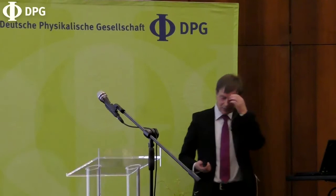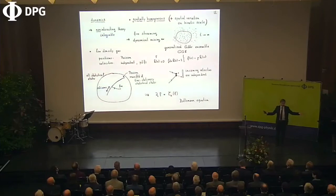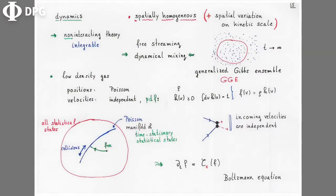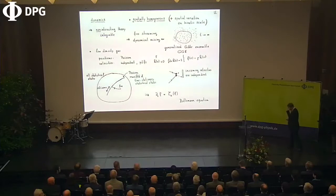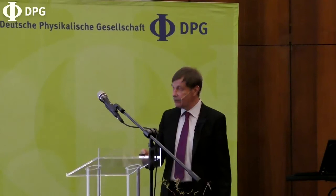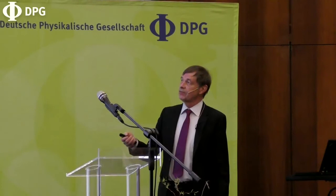This is perhaps the most difficult slide — the conceptual core. Let's look at the dynamics of a spatially completely homogeneous system. The system is not in equilibrium, so the velocity distribution will not be Maxwellian. The question is what equation governs the approach to equilibrium. One important and underemphasized point is that there's a property of the non-interacting gas used very heavily. In modern terms it's called an integrable theory — the number of conserved quantities is proportional to the number of degrees of freedom, and particles just perform free motion.